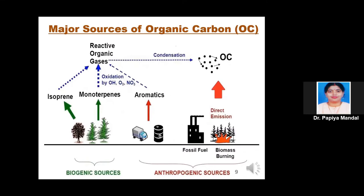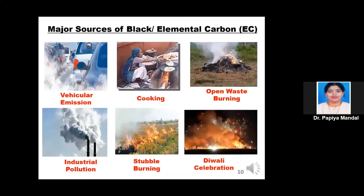The major sources of organic carbon can be two types: biogenic and anthropogenic. From biogenic sources, plants release isoprene, monoterpenes, and aromatic compounds into the atmosphere, which react with organic gases. After reaction, the compound condenses and converts to organic carbon. From anthropogenic sources, combustion of fossil fuels or biomass burning directly emits organic carbon into the atmosphere. The major sources of black carbon or elemental carbon include vehicular emissions, cooking with biofuels, open waste burning, Diwali celebrations, industrial pollution, etc.